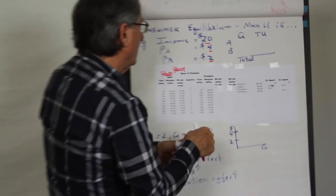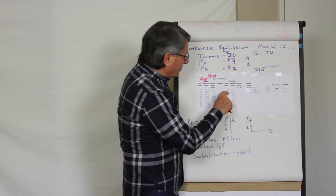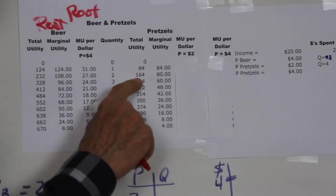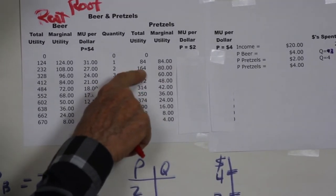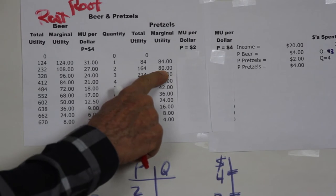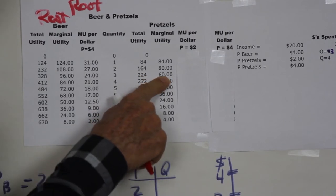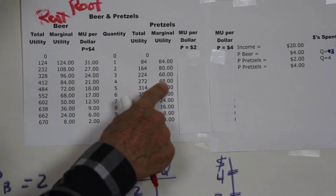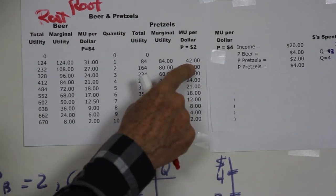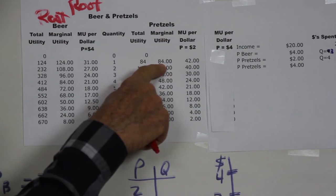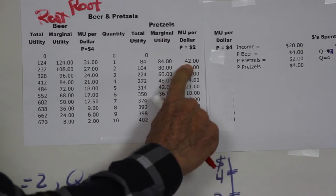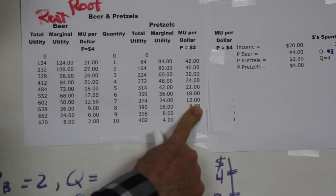Pretzels, on the other hand, cost $2. When you buy the first unit of pretzels you get 84 utils of marginal utility, and the total goes from 84 to 164 on the second — that's a marginal utility of 80. The third gives an additional 60, the fourth 48, and so on. Dividing each marginal utility by the $2 price gives marginal utility per dollar rates of 42, 40, 30, 24, 21, and so on.